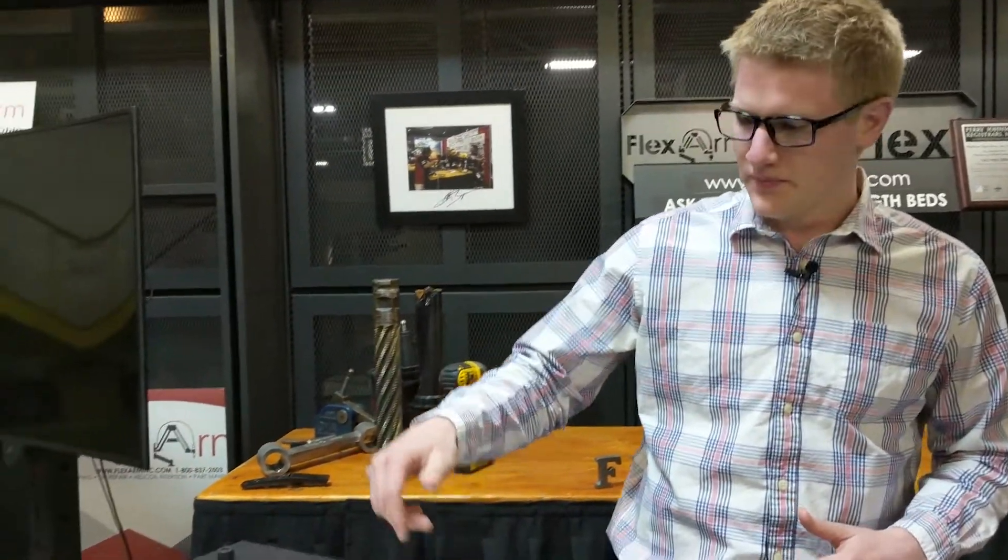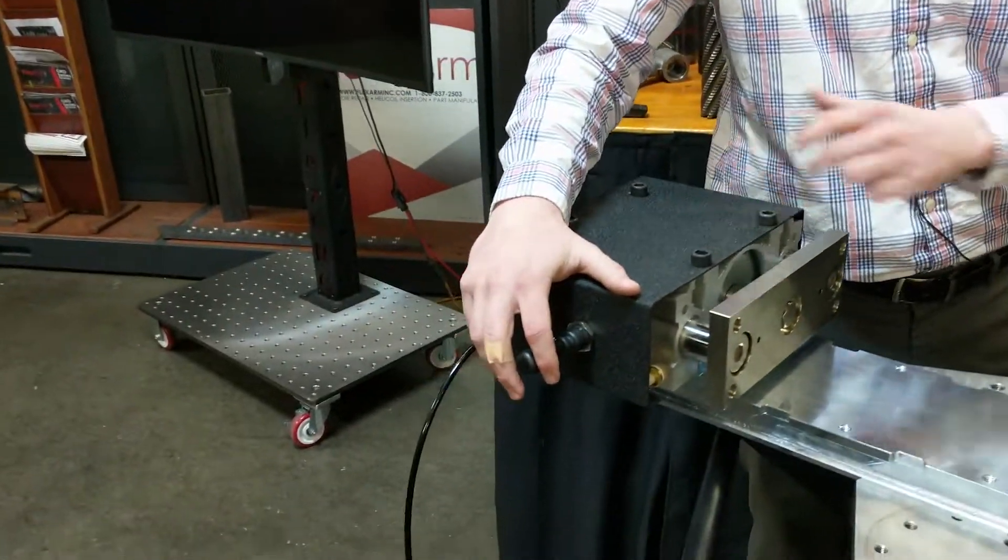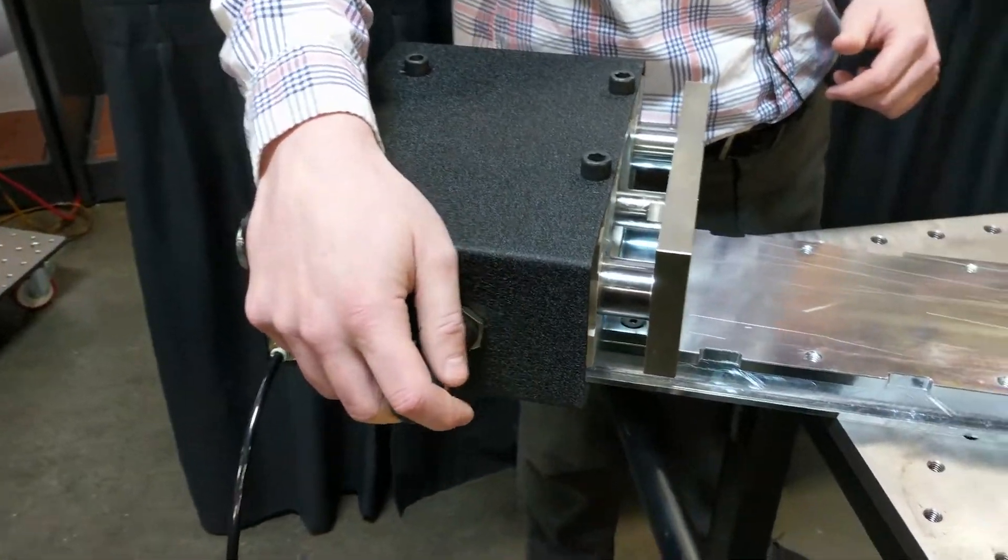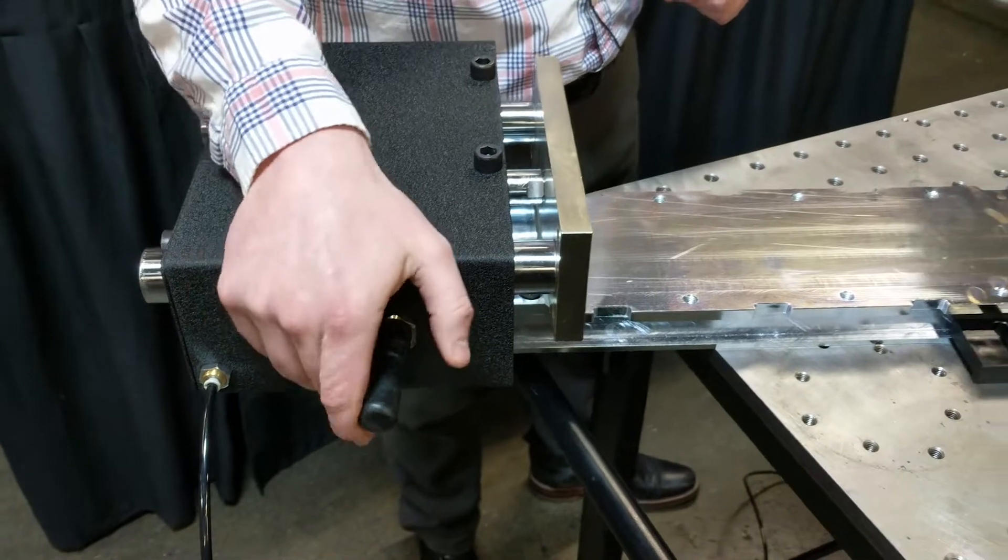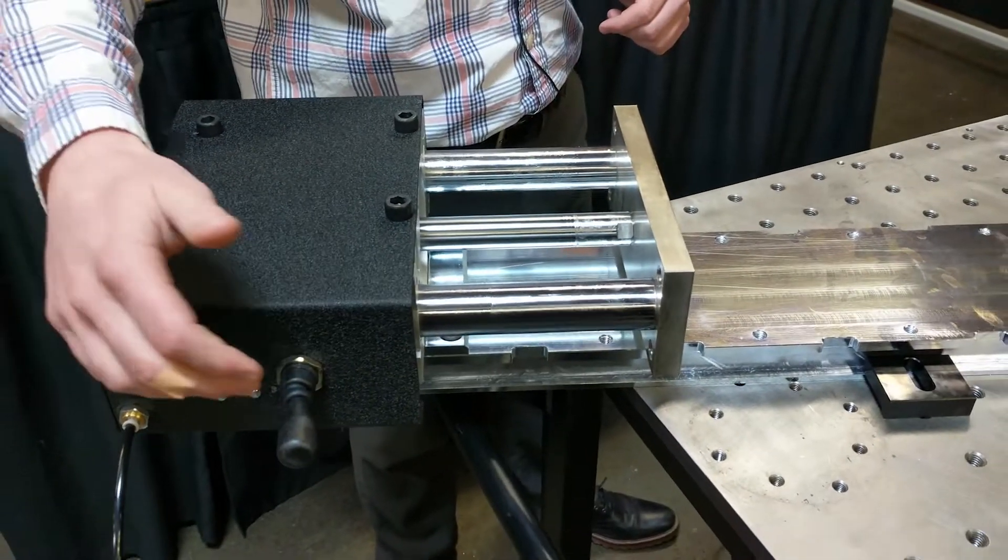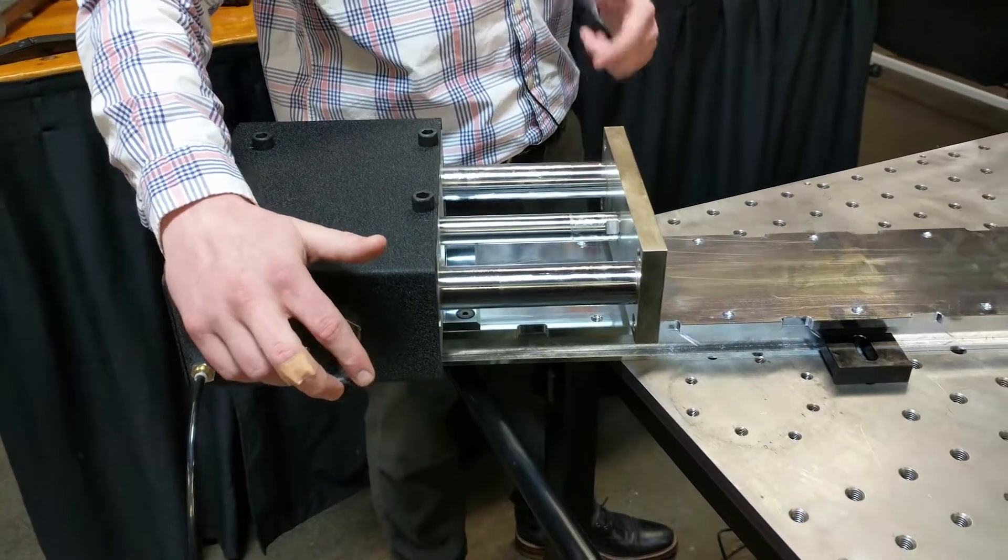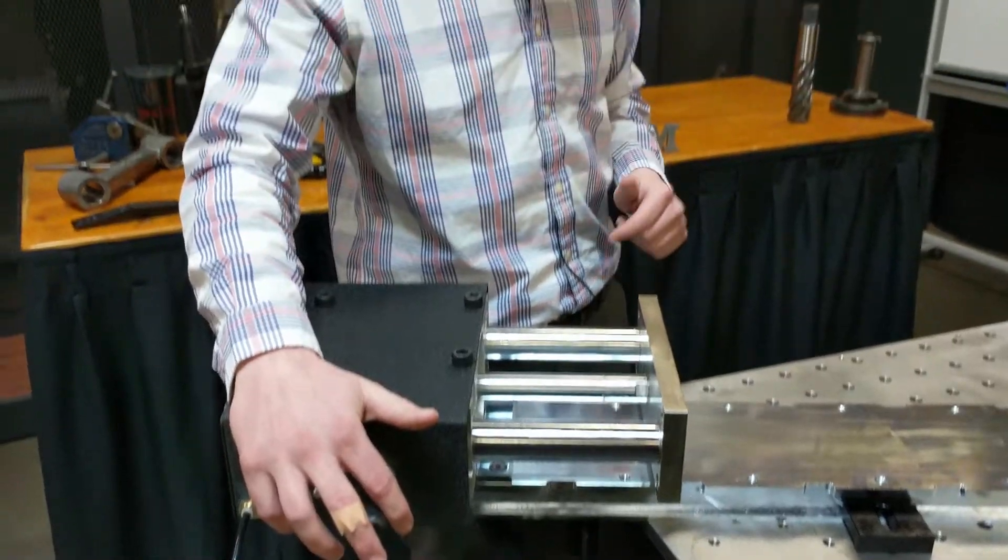So what you'll see here is a big pneumatic cylinder with over 1,200 pounds of force. Got a simple joystick for actuation. Got a 5 inch stroke on the cylinder itself.